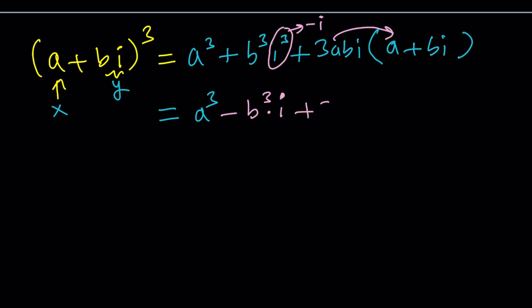So this is negative i, that's going to give us negative b cubed i. And we're going to distribute, that's going to give us 3a squared bi. And when we distribute this, we're going to multiply i times i, which is i squared, which is going to turn into a negative 1. So I'm just going to write it as negative 3ab squared.